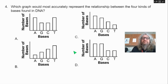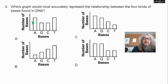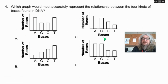Number four. Which graph would most accurately represent the relationship between the four kinds of bases found in DNA? Is it A, B, C, or D?